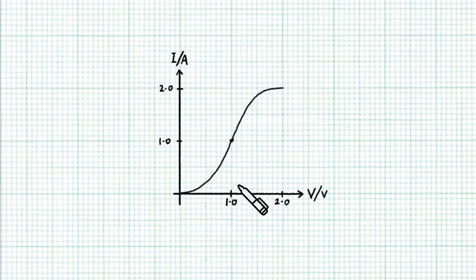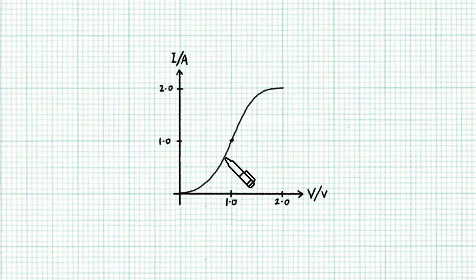Now this is obviously not an ohmic device. Its resistance changes depending on the operating point. But we can always draw the wiper line to each operating point to figure out the resistance at each operating point.